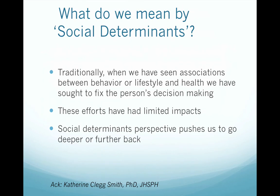When we say social determinants, we mean that whenever we see associations between behaviour, lifestyle, and health, we often try to fix this by fixing the person's decision-making processes — for example, smoking. These efforts have had limited impact because behaviour sometimes stems from other underlying conditions. We need to go further back, dig deeper, or go more upstream to understand social determinants.